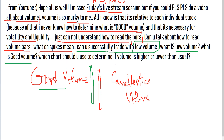Spikes mean when we have a very long candlestick, either up or down. 'Can you successfully trade with low volume? What is low volume, what is good volume? Which chart should we use to determine if volume is higher or lower?' The charts are always the same — the chart shows you all the data from the exchange. I will try in this video to explain all these things, because there are a lot of things related to the subject and leaving any of them out would make it incomplete.